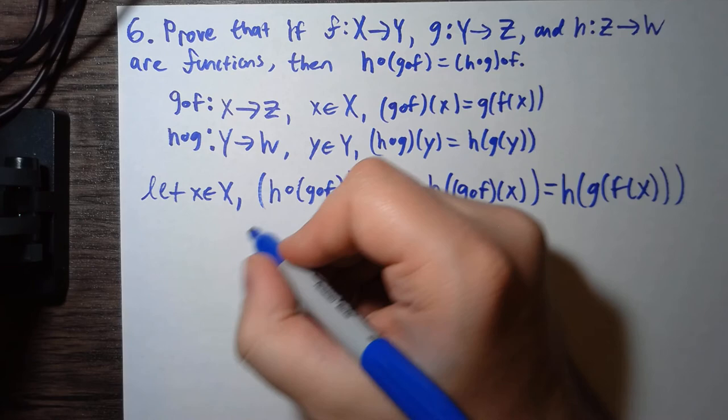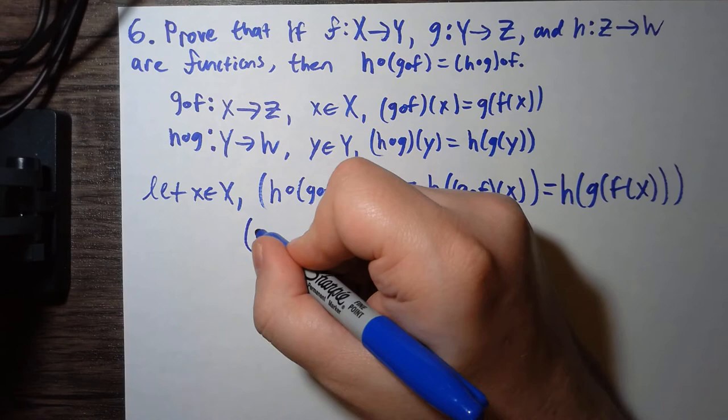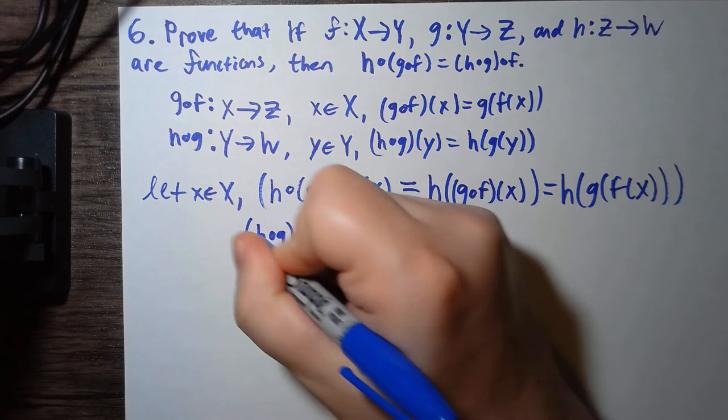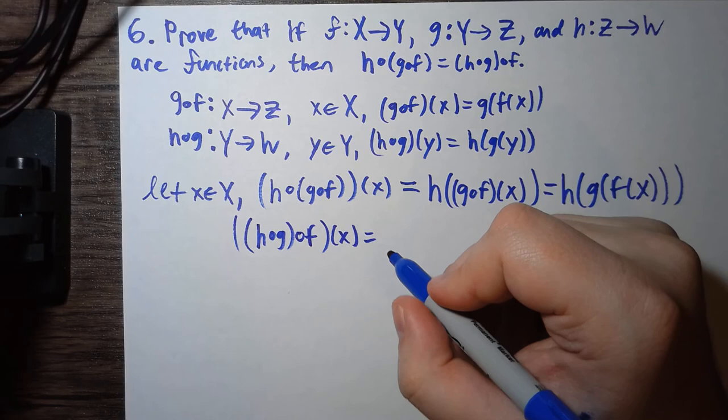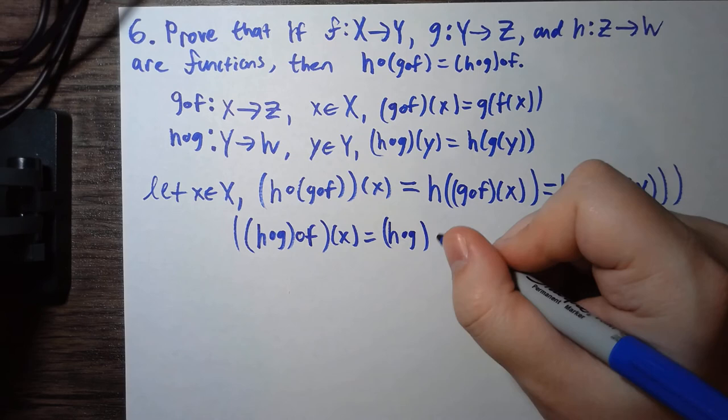Similarly, if we do the other one, so if we do (h∘g)∘f, if we're inputting x, then this is just going to be h∘g, but now the input's going to be f(x).